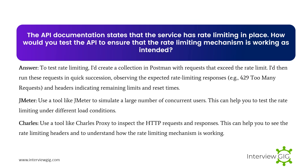The API documentation states that the service has rate limiting in place. How would you test the API to ensure the rate limiting mechanism is working as intended? To test rate limiting, I'd create a collection in Postman with requests that exceed the rate limit, then run these requests in quick succession, observing the expected rate limiting responses — for example, 429 Too Many Requests — and headers indicating remaining limits and reset times.